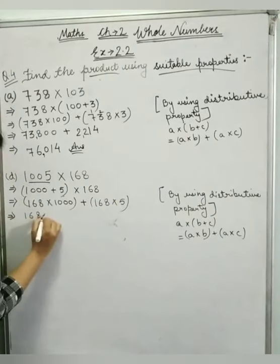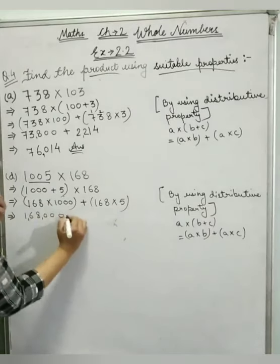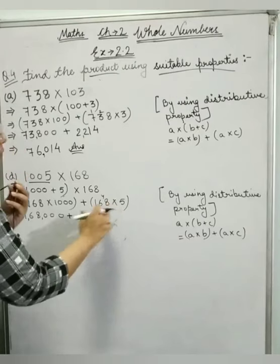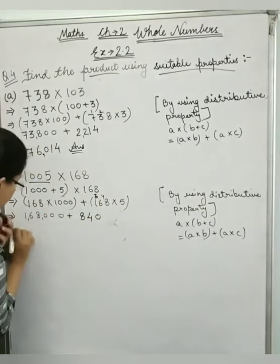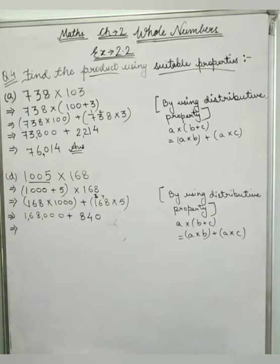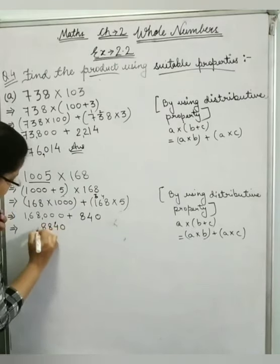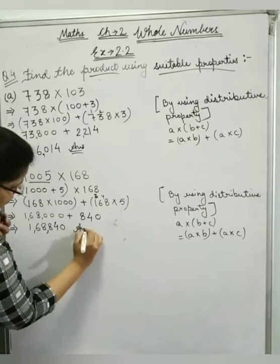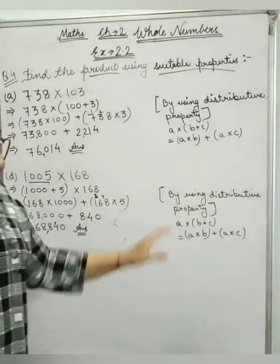Now if I multiply it, 168,000 plus 840 equals 168,840. In these 2 questions, I used the distributive property. You see that.